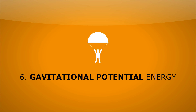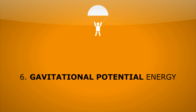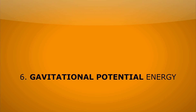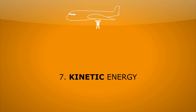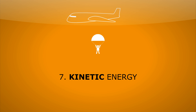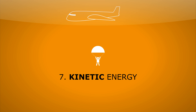Number 6: gravitational potential energy. The higher up the skydiver goes, the more gravitational potential energy he has. Number 7: kinetic energy. As a skydiver falls out of the plane, he's moving, and kinetic energy is just a fancy word for movement energy.